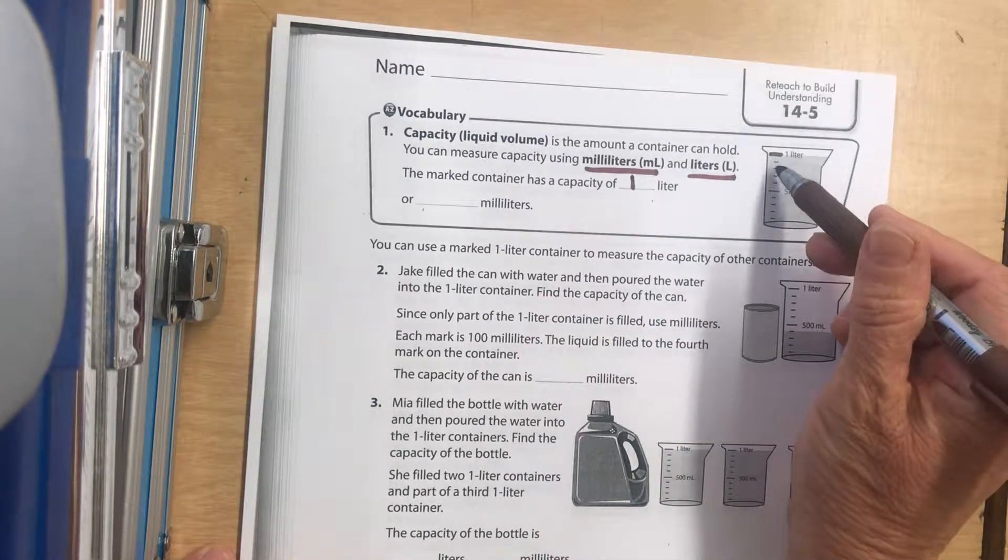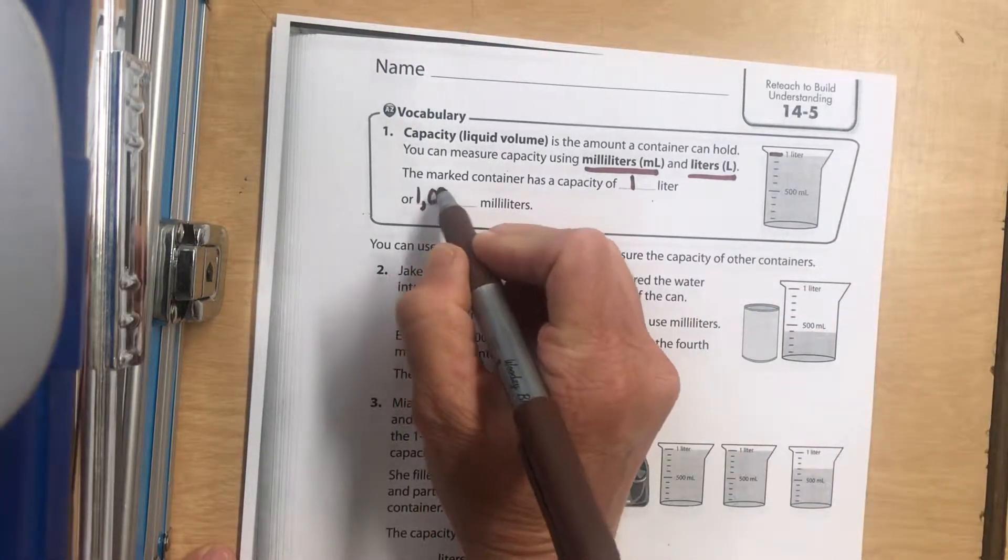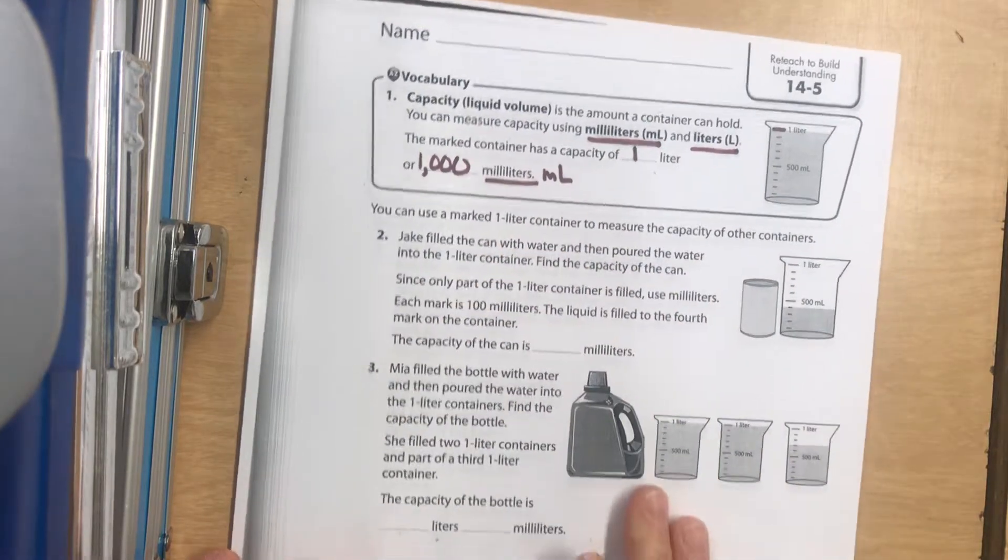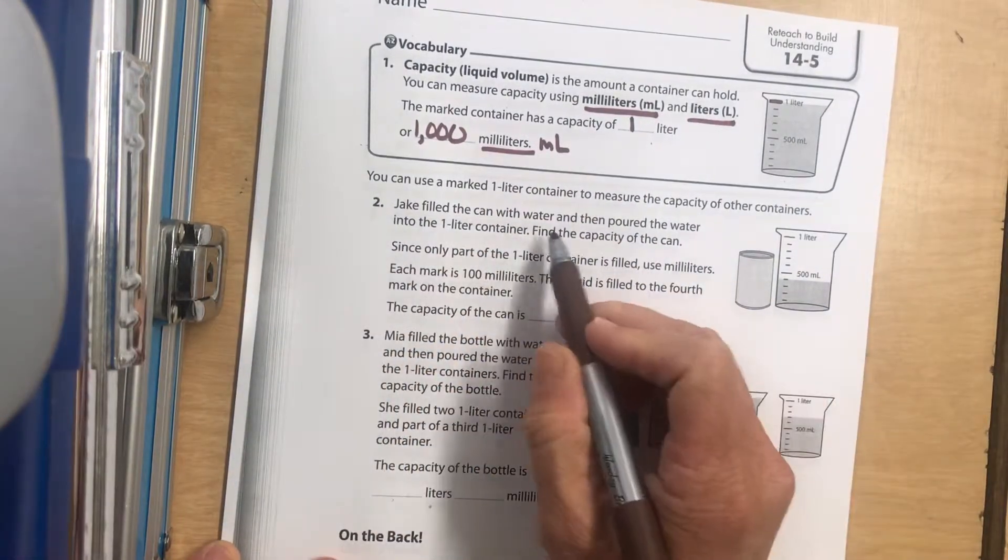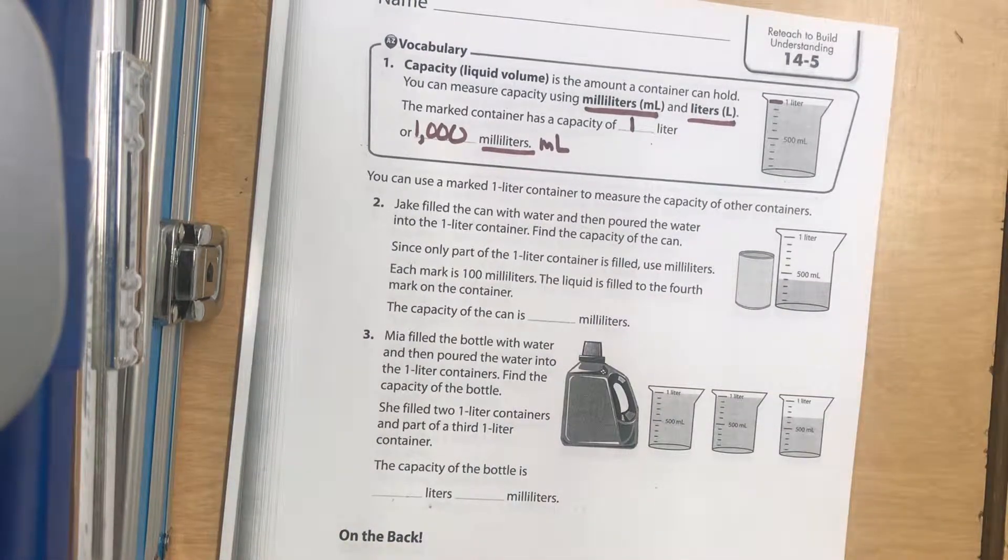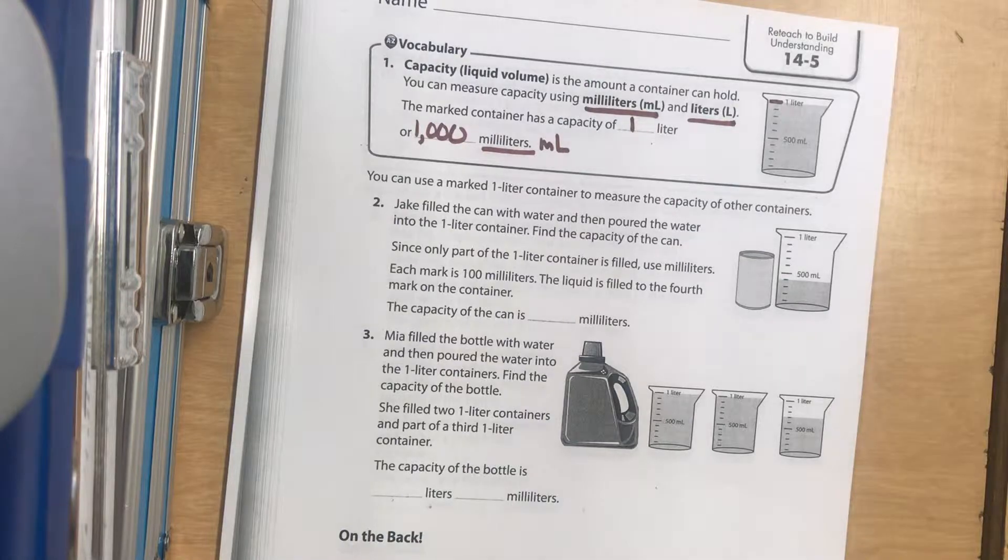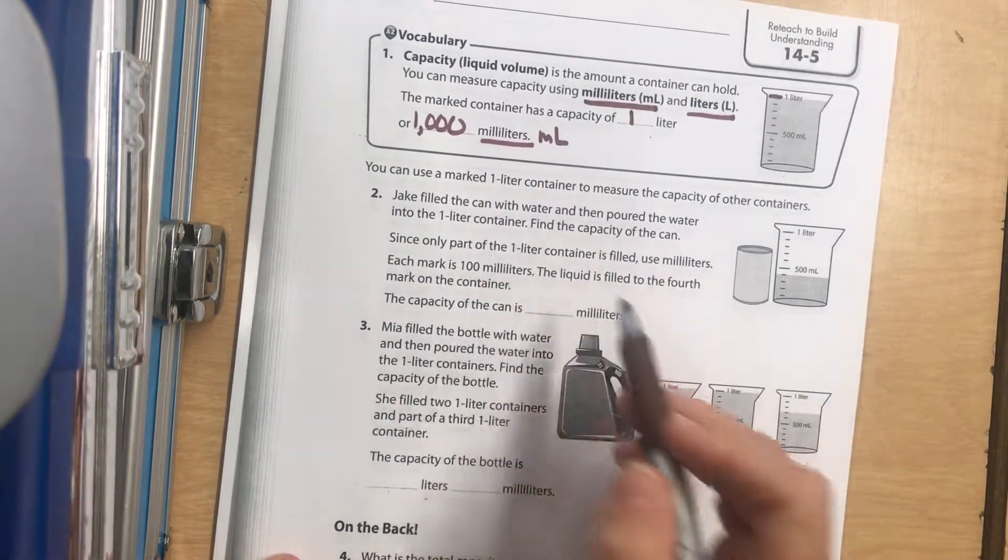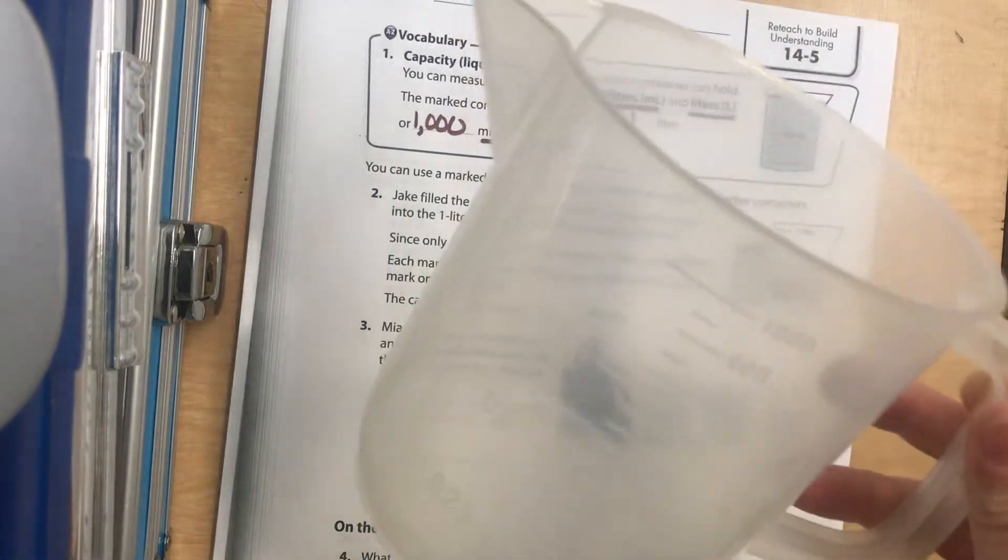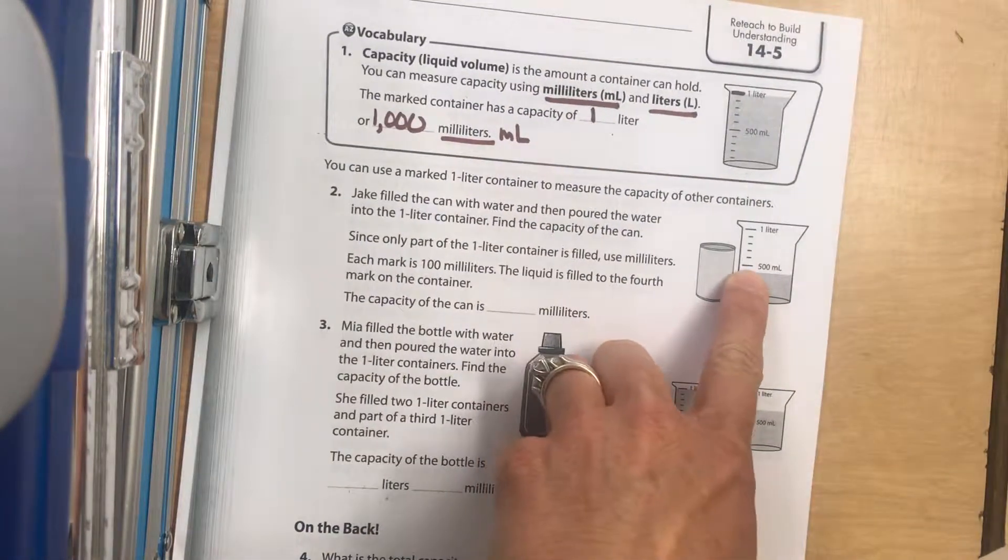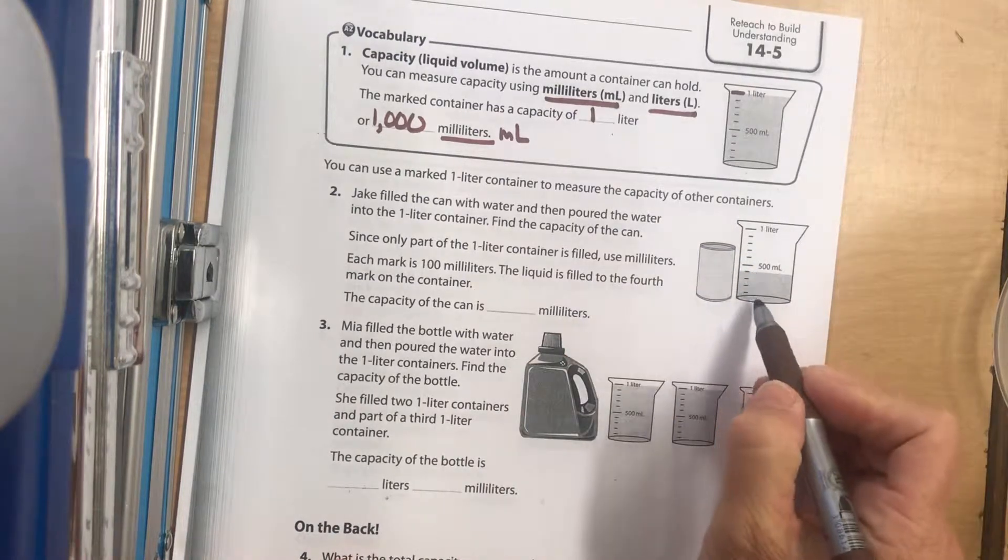Jake filled a can with water. He took the can, filled it up, and then poured it into a one-liter container. It's showing that it's less than halfway. This is the water that he poured from the can into there.